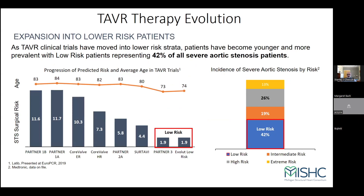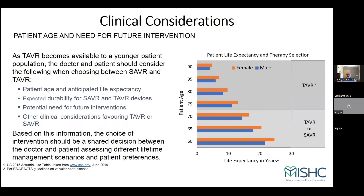As TAVR clinical trials have moved into lower risk strata, the patients have become younger and more prevalent, with low-risk patients now representing 42% of all severe AS patients. You can see how the age has come down, not to the extent we expected. As we look at TBT and MISIC data, we will start to see these numbers also dip into the 60s. We anticipate that most of our patients — 42% — will be low risk. Why are we talking about low risk? Because most of our patients will be in this domain with bicuspid.